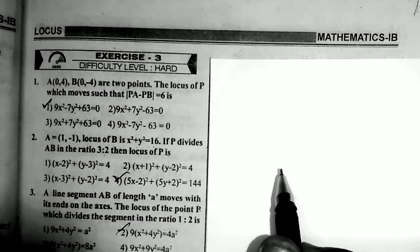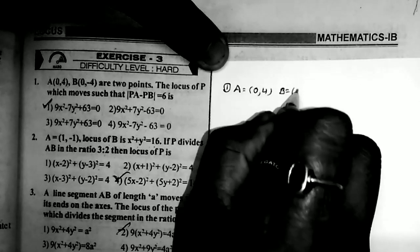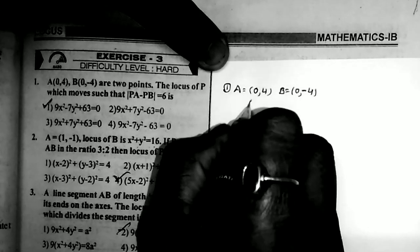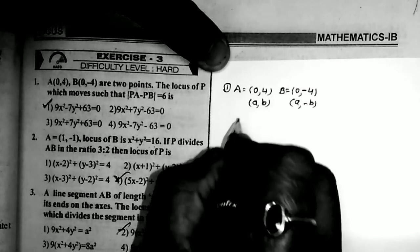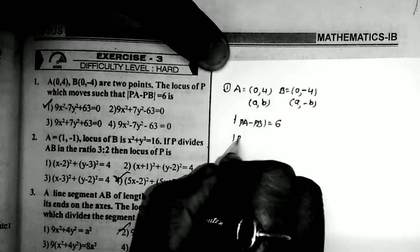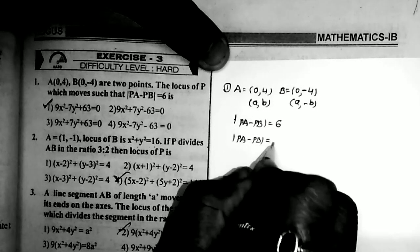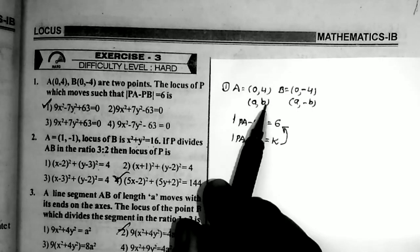See the first question. If A is equal to (0, 4) and B is equal to (0, -4) are two points, the locus of the point P which moves such that |PA - PB| = 6. Here two points are given: first point A = (0, 4) and second point B = (0, -4). Observe that the x-coordinates are equal in both points, so I take these two points as (a, b) and (a, -b). The given condition is |PA - PB| = 6, so comparing with |PA - PB| = k, the value of k = 6, a = 0, b = 4.